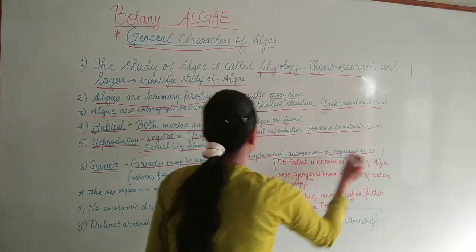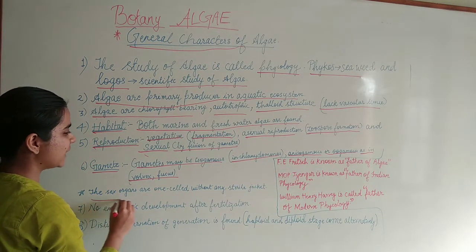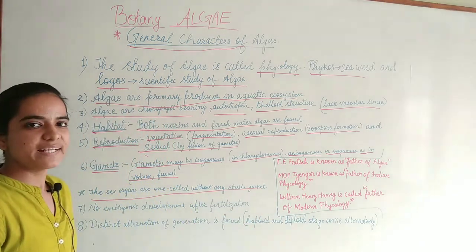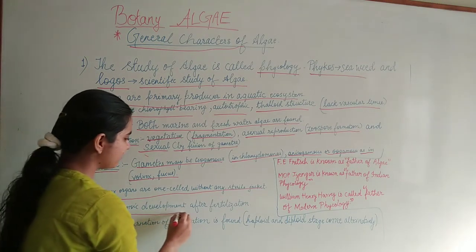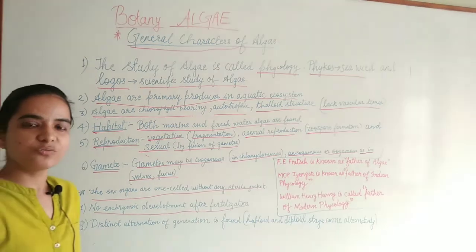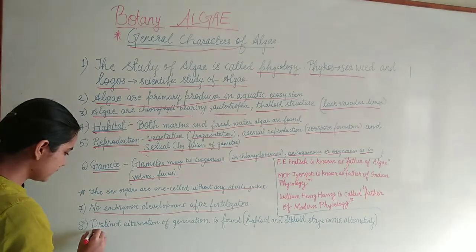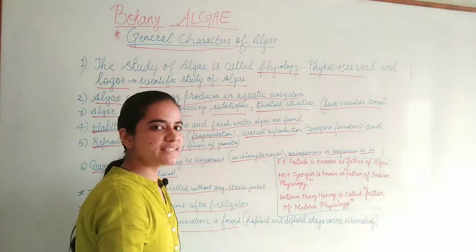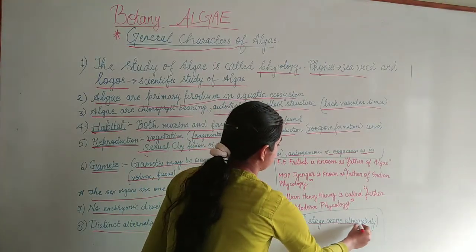Oogamous type is seen in Volvox and Fucus. The sex organs are unicellular without any sterile jacket — a sterile jacket is found in bryophytes but not in algae. No embryonic development is seen after fertilization; after fertilization a zygote is formed but it does not divide further to form an embryo. Distinct alternation of generation is found, meaning haploid and diploid stages come alternately in the life cycle of algae.